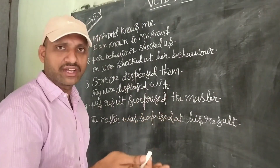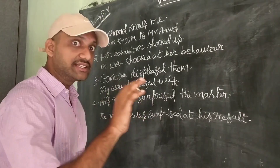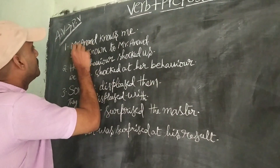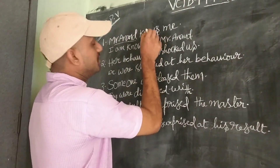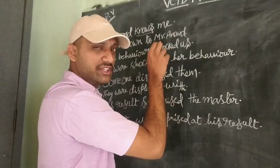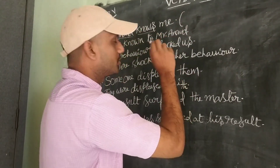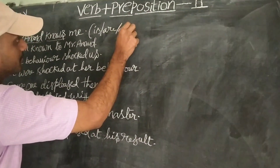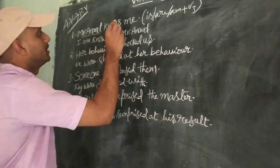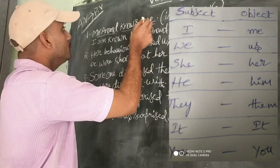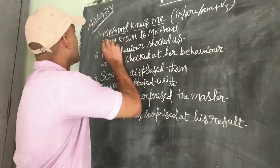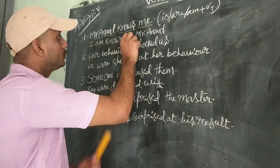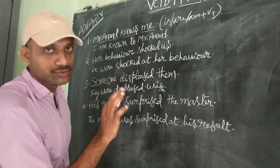I am known to everyone in my area. He is known to everyone in his area. Mr. Anand knows me — Mr. Anand is the doer. 'Knows' is the verb form and it is V5, the only verb form in simple present. The rule we follow is: am/is/are plus V3. 'Me' is the sufferer, changed to 'I' in subjective form. So: I am known to Mr. Anand — we should not change Mr. Anand.